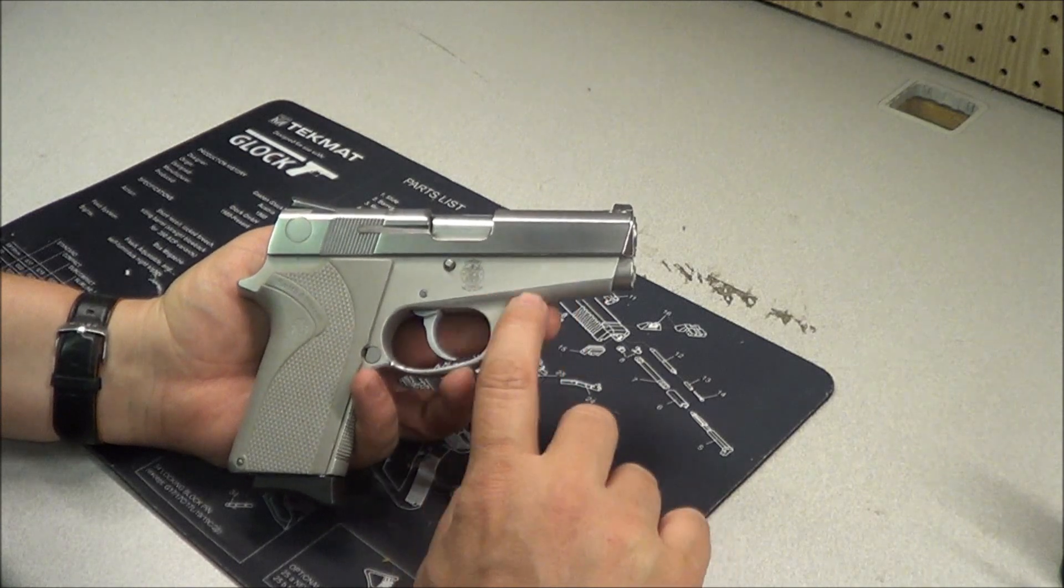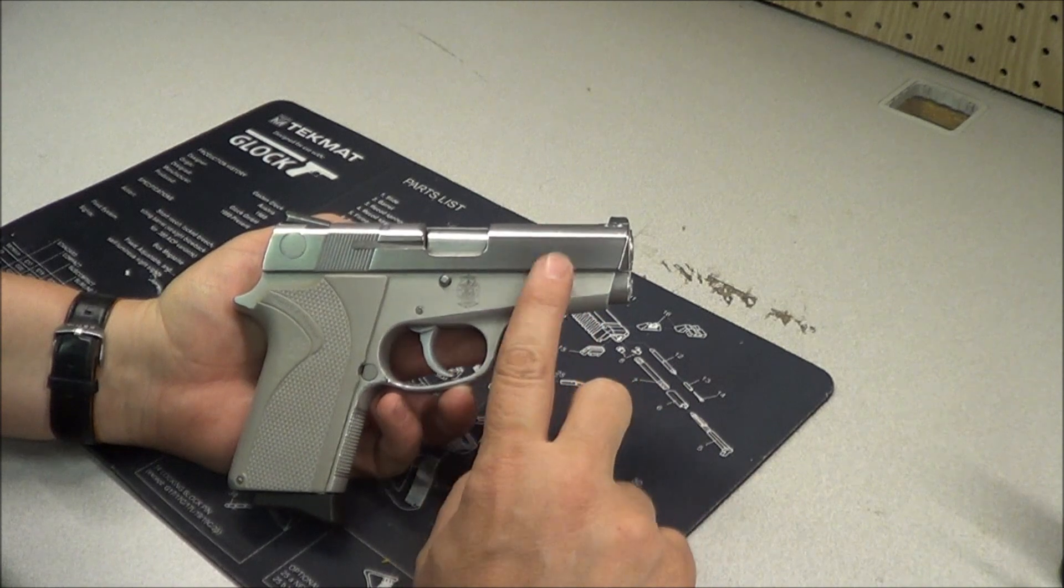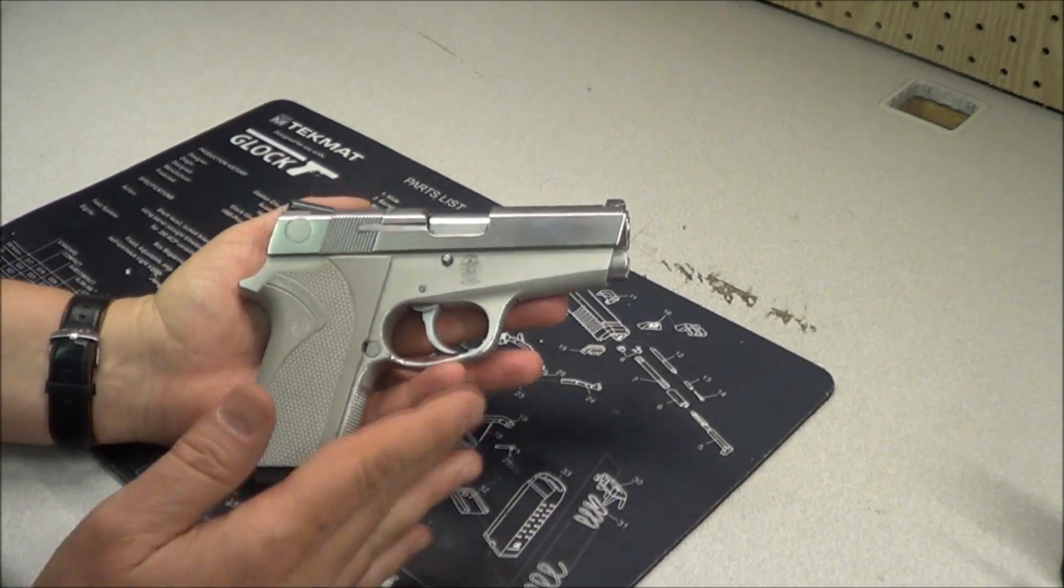It didn't have this upturn to it. It came straight out. And then they came out with the 3913 Ladysmith, which looked like this pistol with the slope out here.